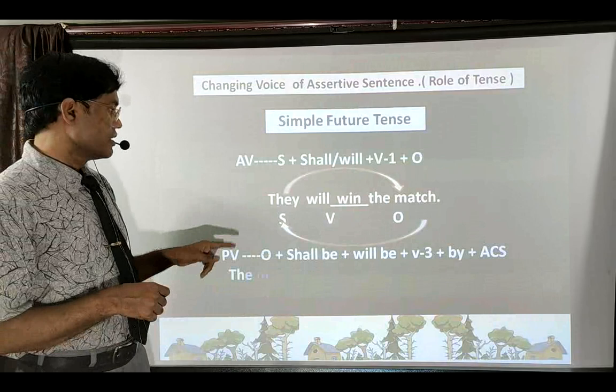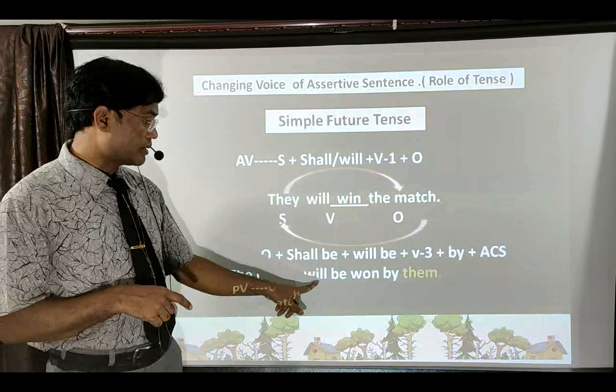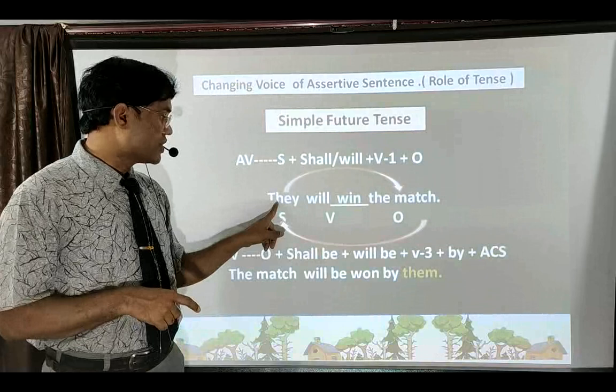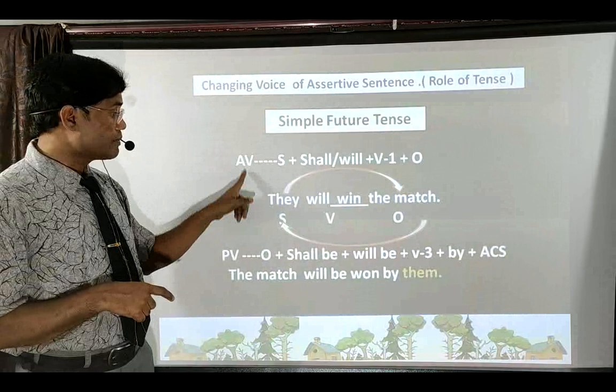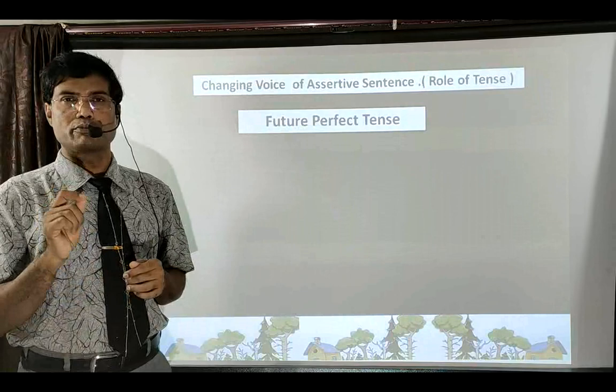With the help of this formula, you can change this sentence into passive voice. Subject is replaced by object: 'The match' comes first. Since it's not 'I' or 'we', we use 'will be'. Then third form 'won', then 'by them' (objective case of 'they'). So: 'The match will be won by them.' This is how you can make passive voice in Simple Future Tense.